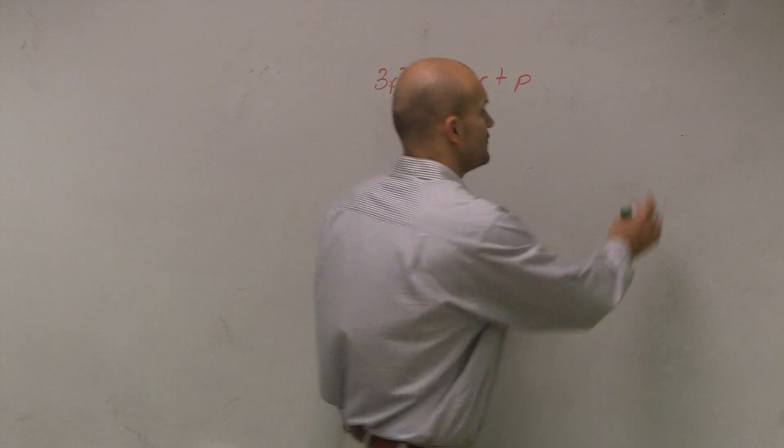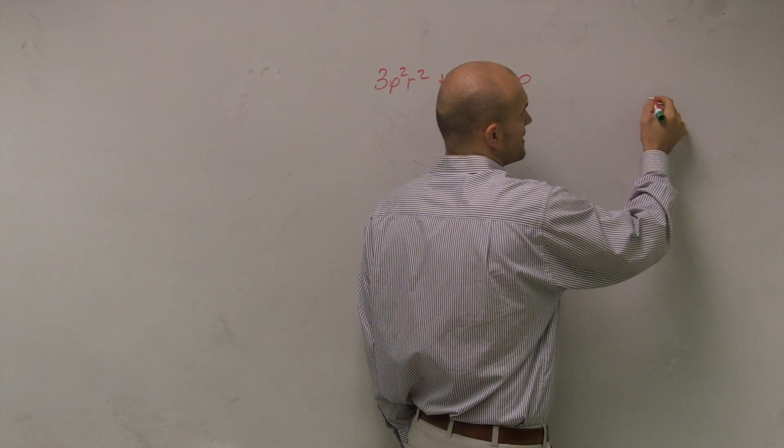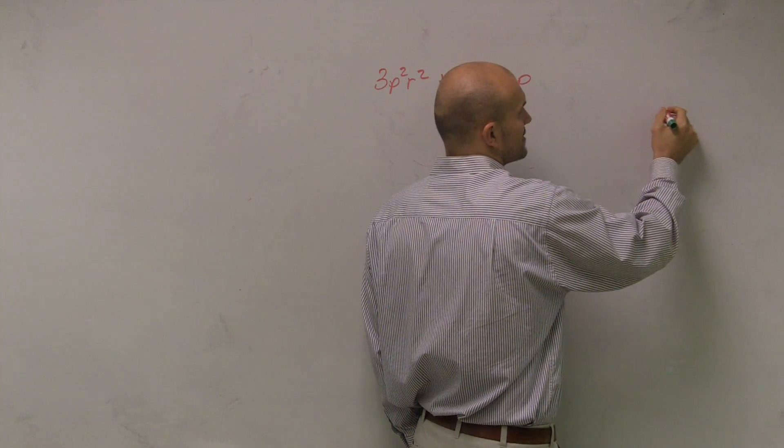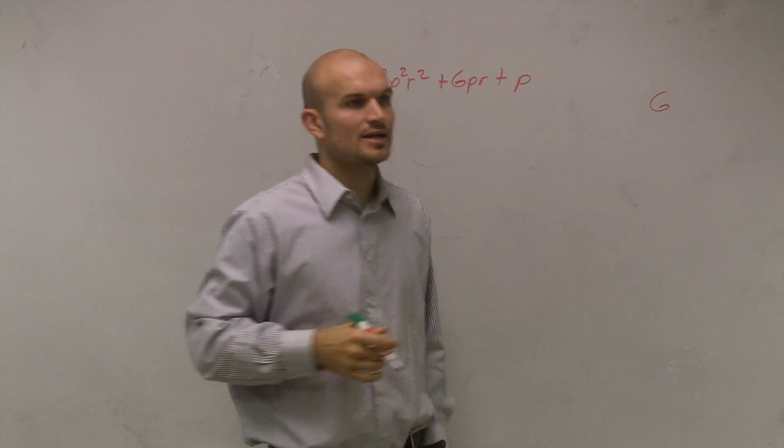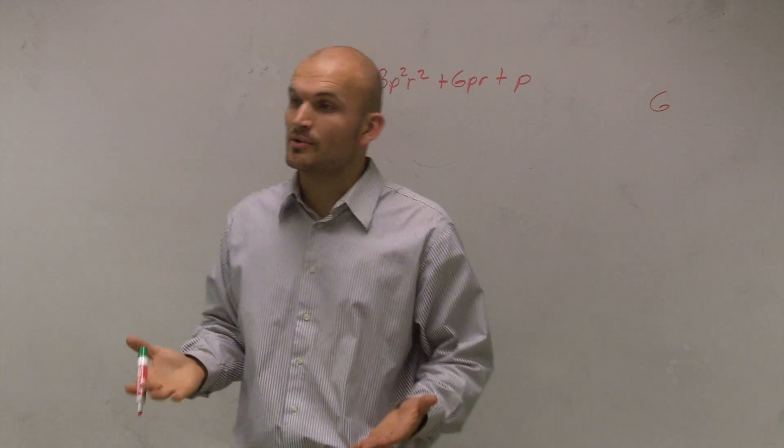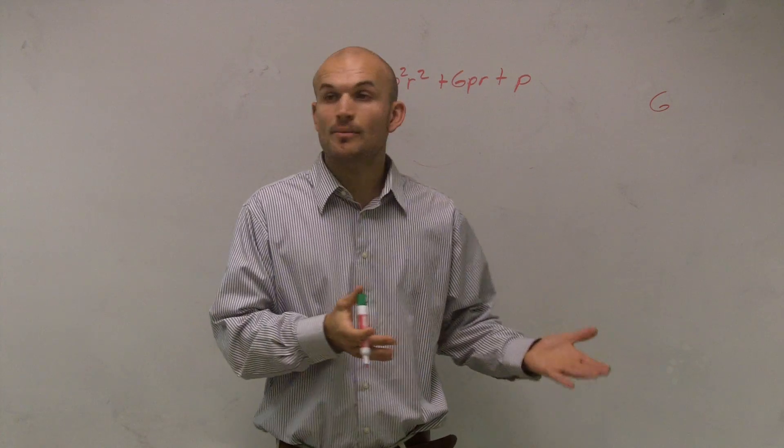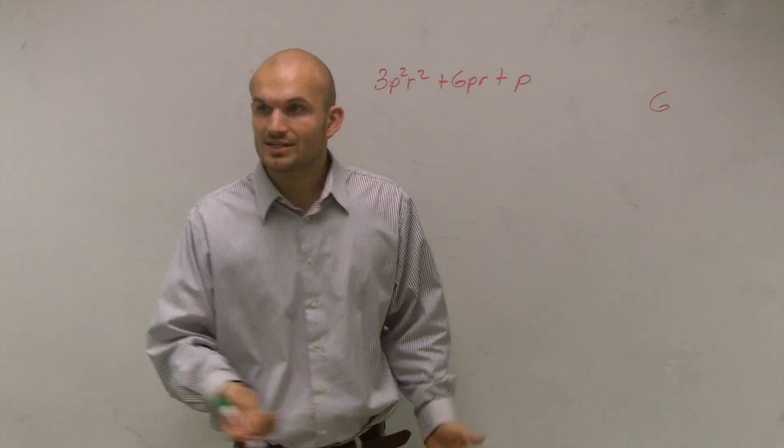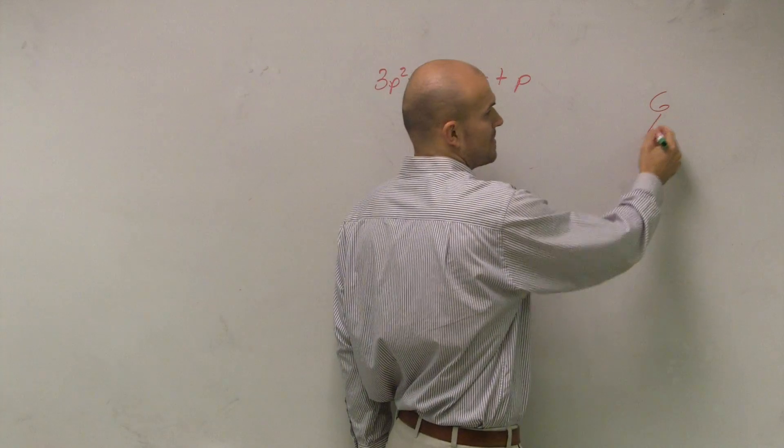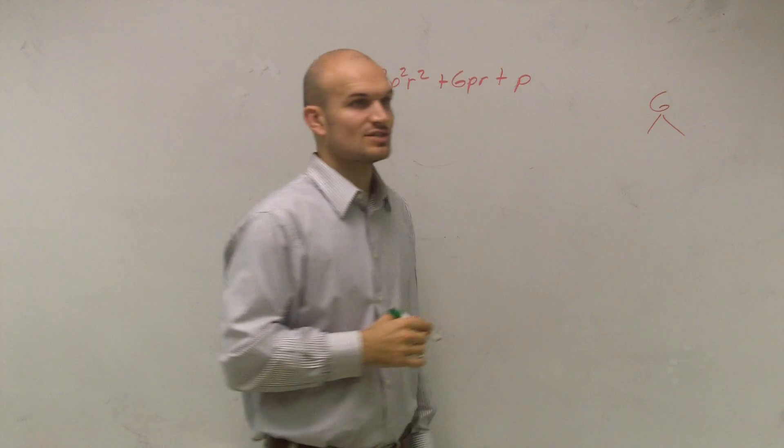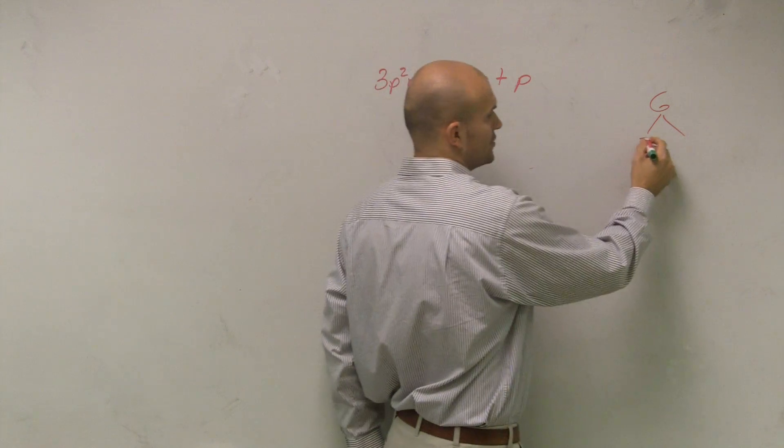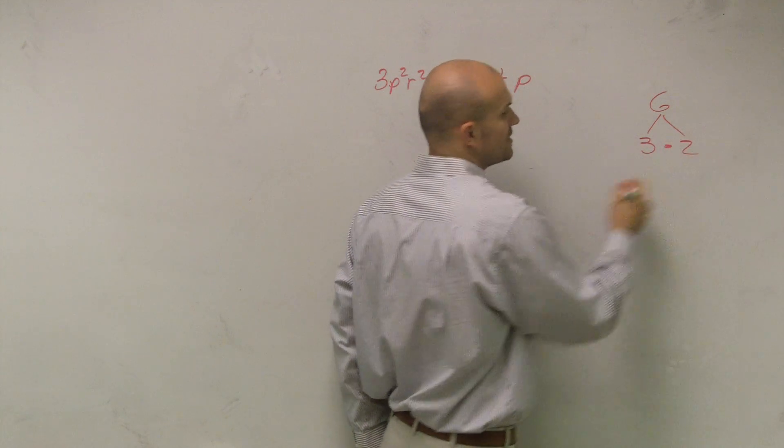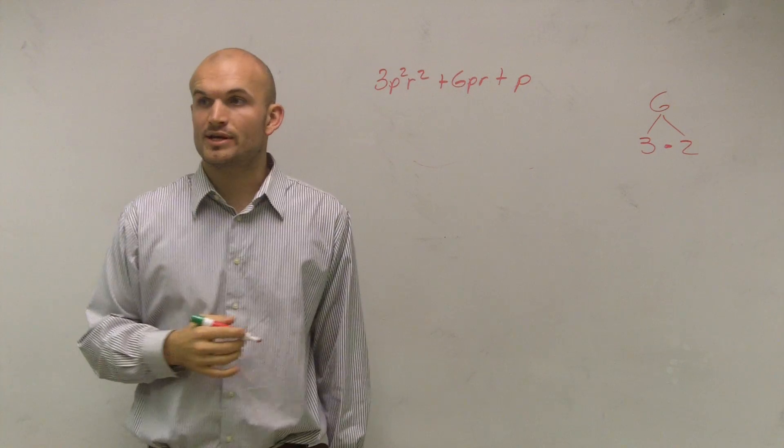A quick review for you. If you remember, what we worked on last class period was factoring. One thing we looked at, if we don't have a prime number, meaning we can divide other numbers into it besides itself and one, we can factor it into two separate primes. So if I was going to factor 6, I could break that down into two factors other than 6 and 1, which would be 3 and 2.